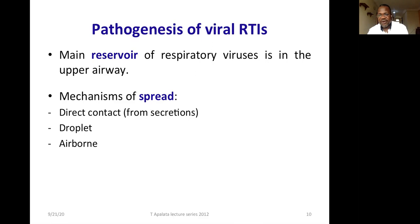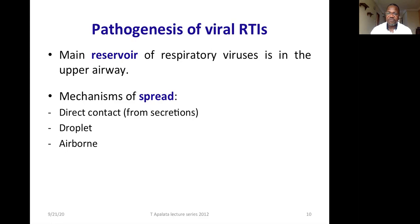To prevent droplet-borne infection, the distance between two patients in a hospital facility is very important, as is the use of masks. For airborne transmission, ventilation is very important, as is the use of respirators. While viral invasion of the upper respiratory tract is the basic mechanism, pathogenesis for various respiratory viruses is somewhat different because those viruses attach to different receptors.